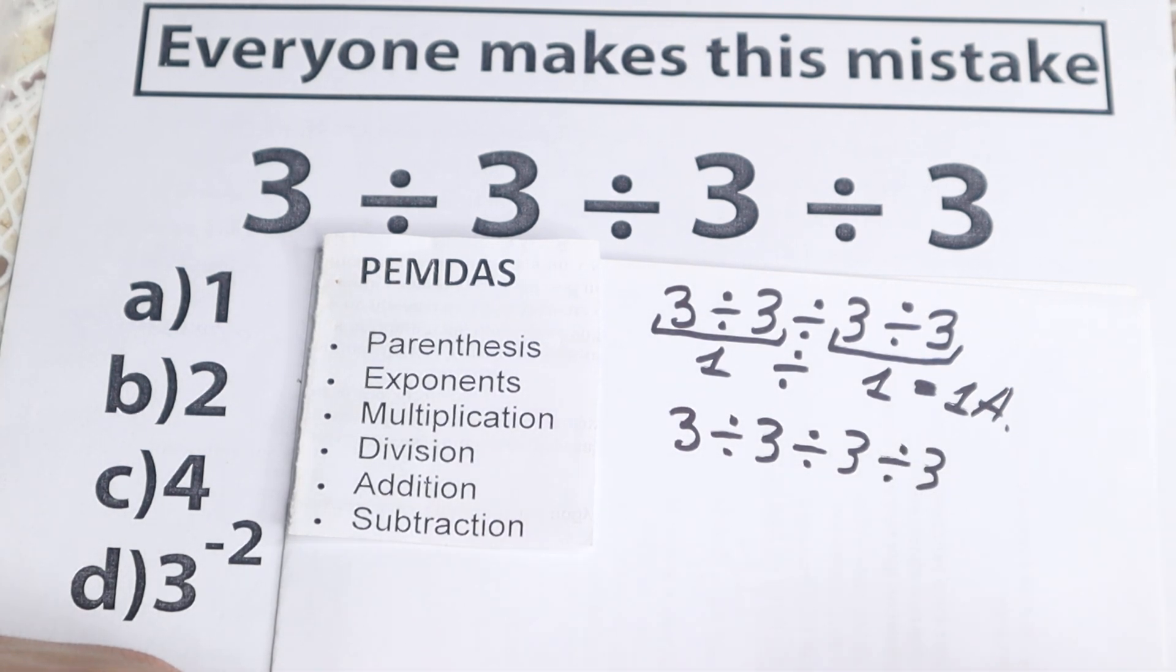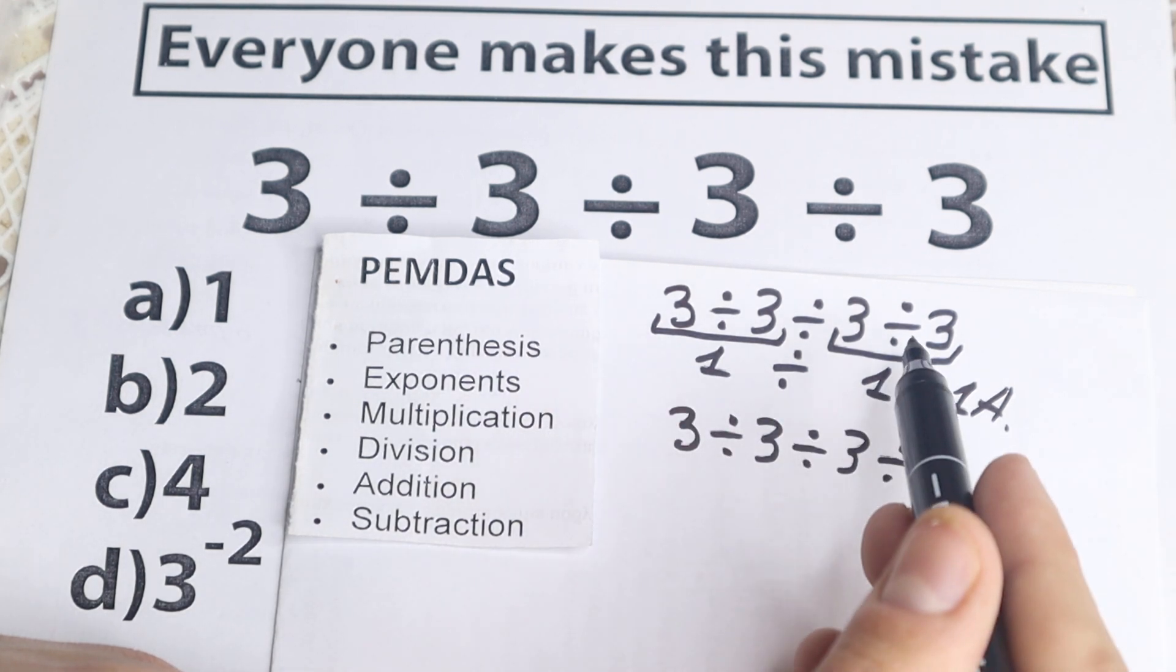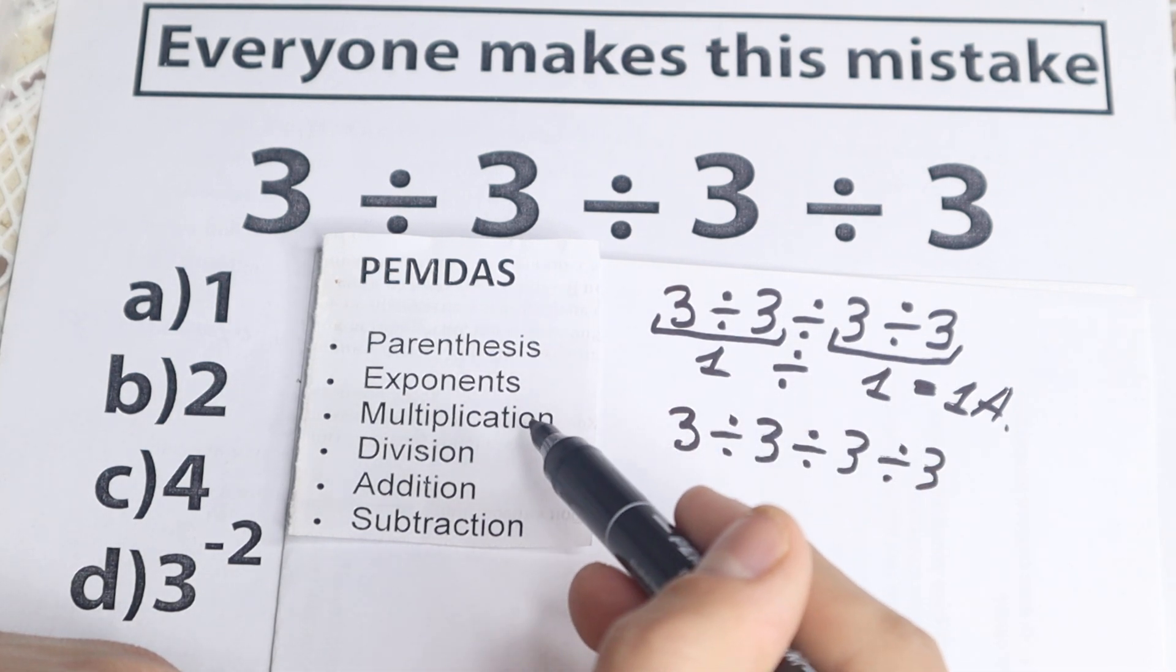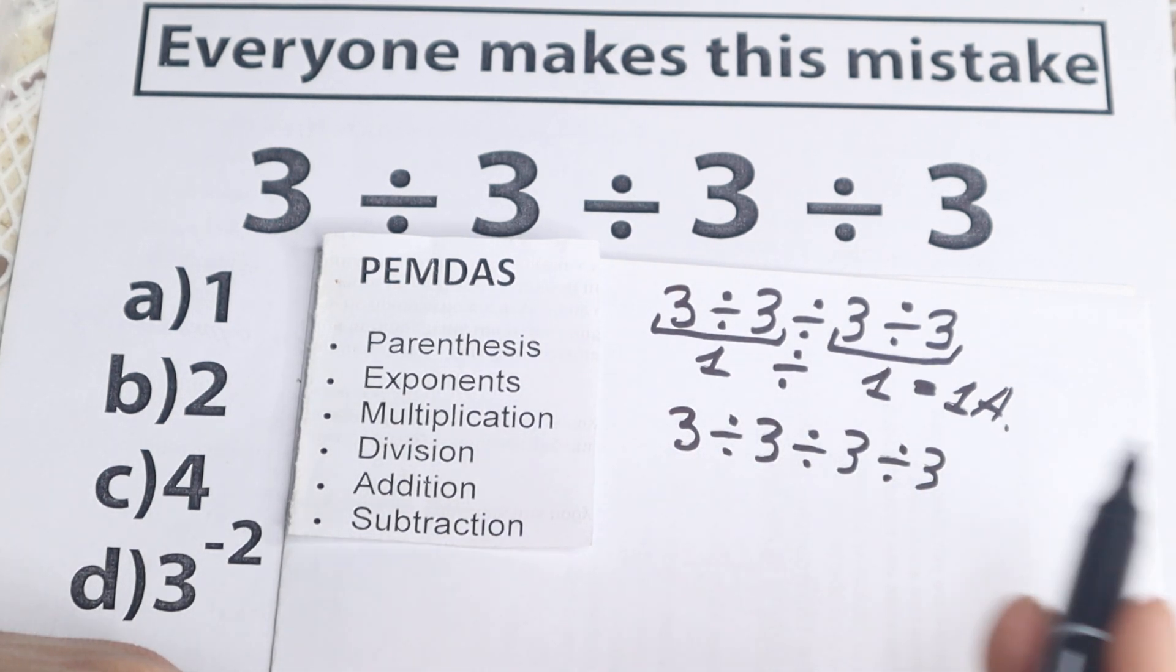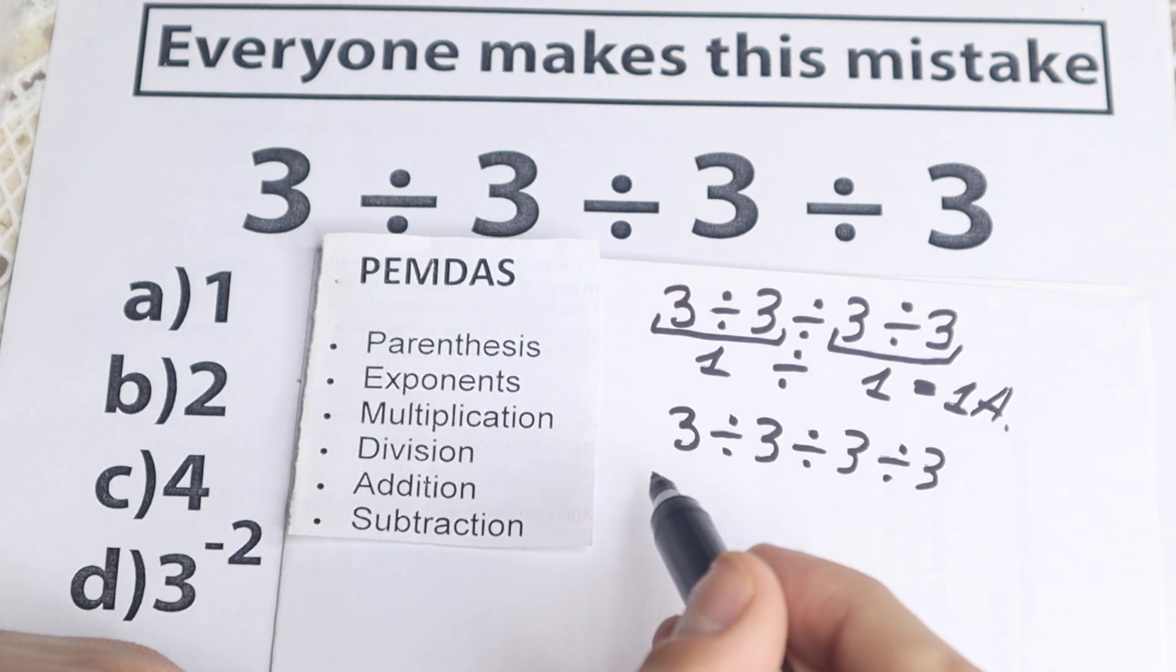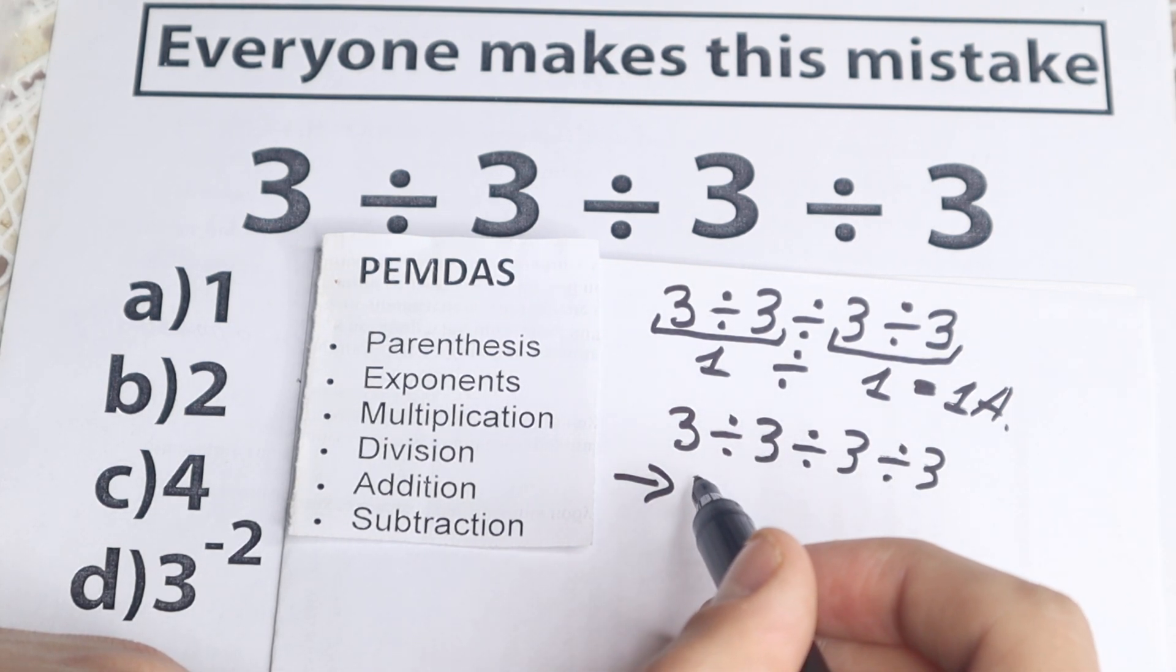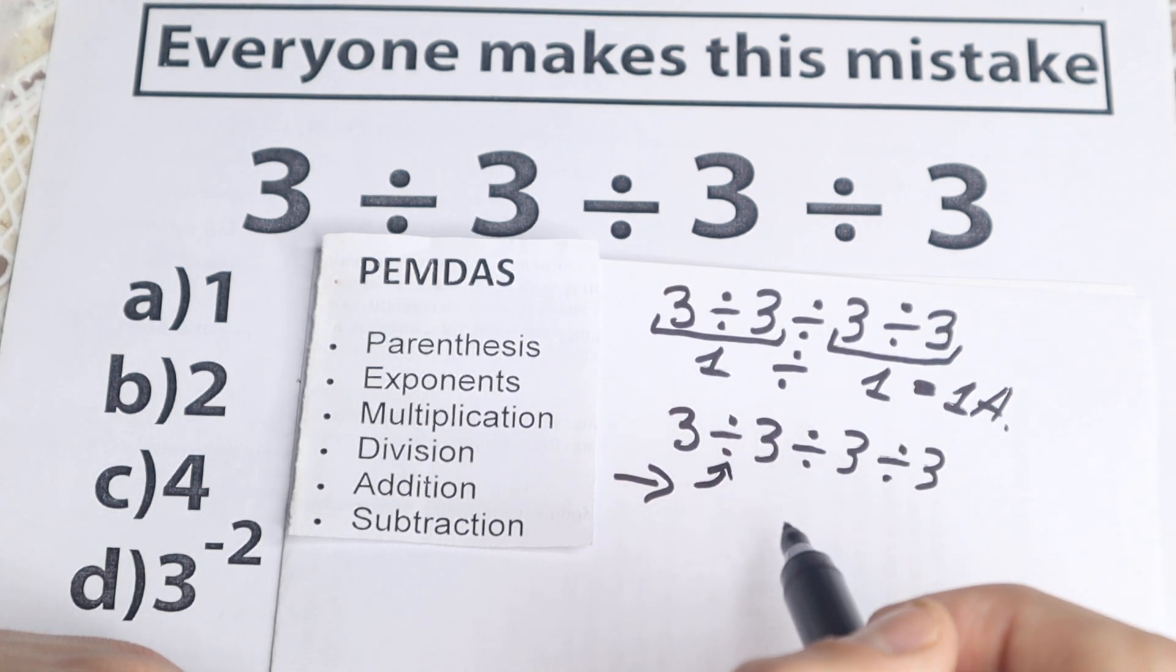But what about order of operation according to PEMDAS? If you have parentheses, you need to start from parentheses. If you have exponent, you need to start from exponent. If you have multiplication and division part, this is the first step. If you're talking about order, you need to go from left to right. And right here we need to scan what is the first sign from left to right. The first sign from left to right is this division on the left hand side.